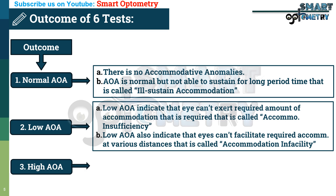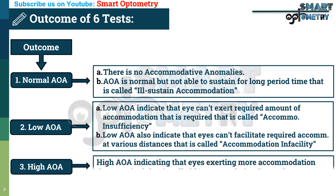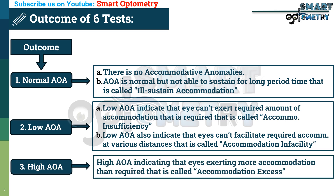High amplitude of accommodation indicates the patient is exerting more accommodation than required — that is called accommodation excess.